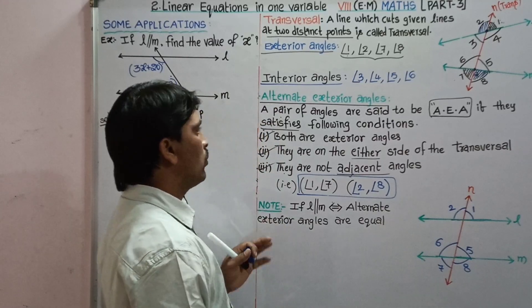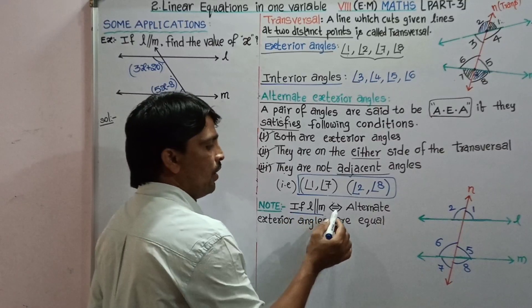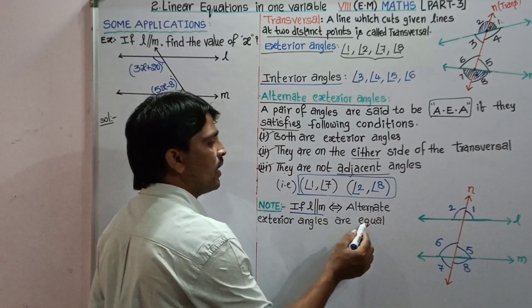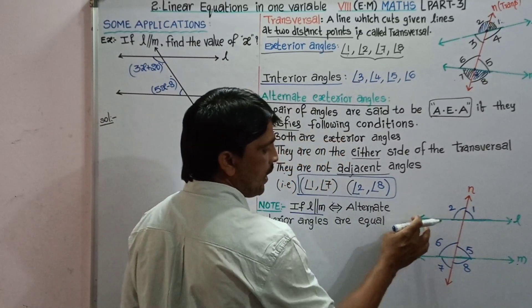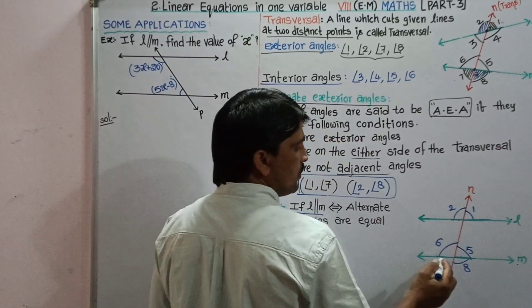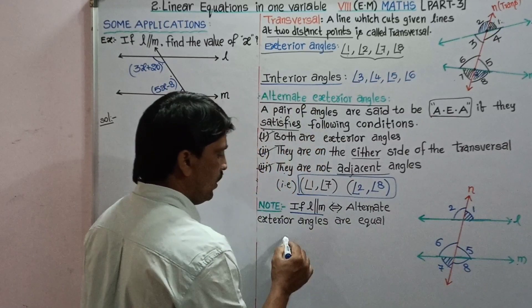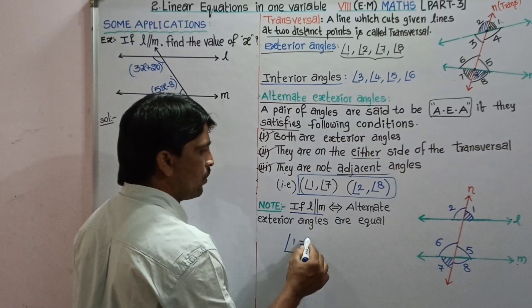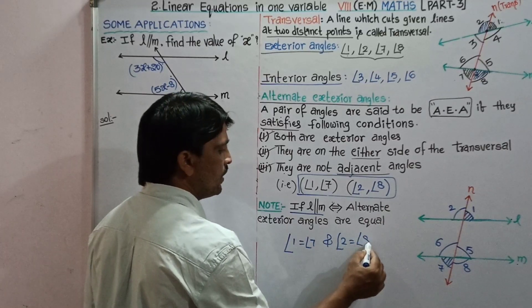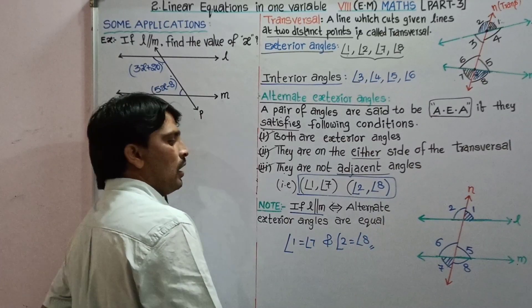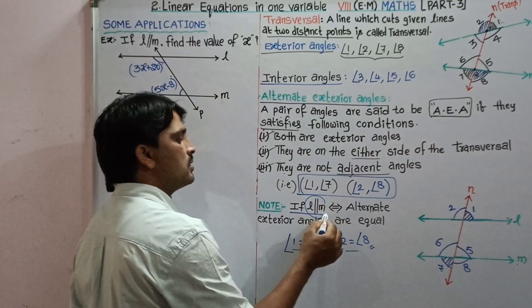Note on alternate exterior angles: if lines L and M are parallel, then alternate exterior angles are equal — angle 1 = angle 7 and angle 2 = angle 8. Conversely, if the alternate exterior angles are equal, then lines are parallel.